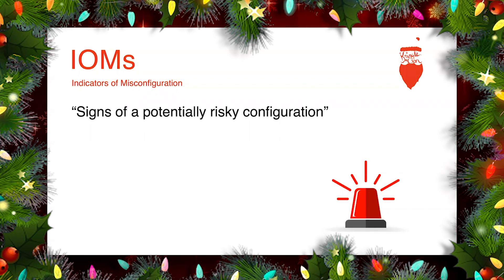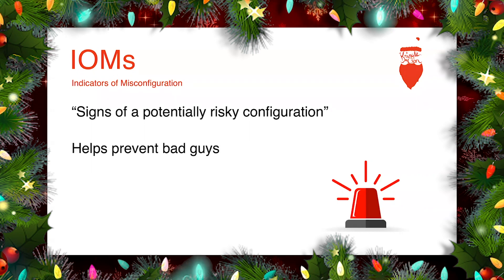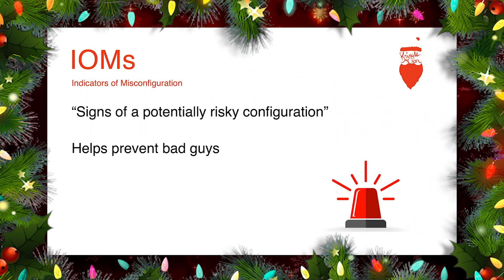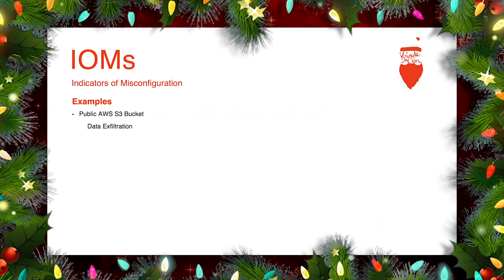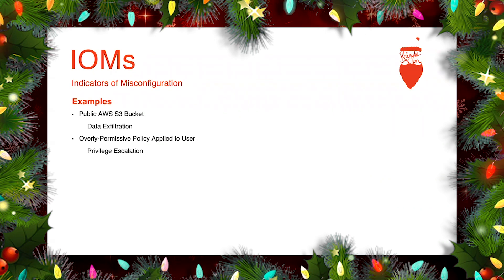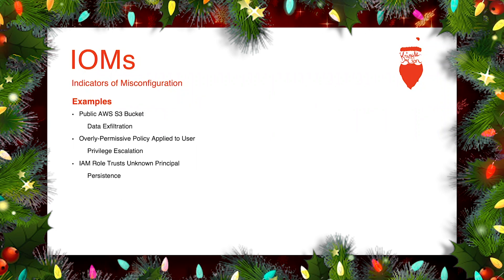First, we're going to talk about IOMs, or Indicators of Misconfiguration — signs of a potentially risky configuration in an environment. They help prevent bad guys. Some examples: a public AWS S3 bucket that could indicate data exfiltration; an overly permissive policy applied to a user, which could mean privilege escalation; an IAM role that trusts an unknown principal, which could be an actor establishing persistence.